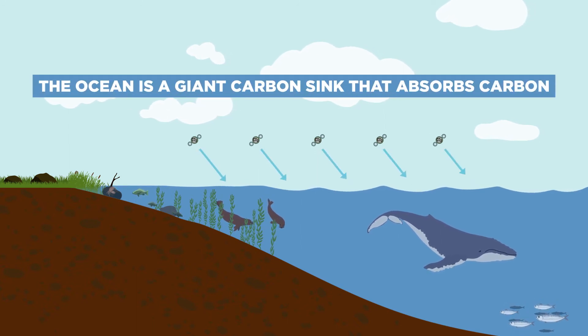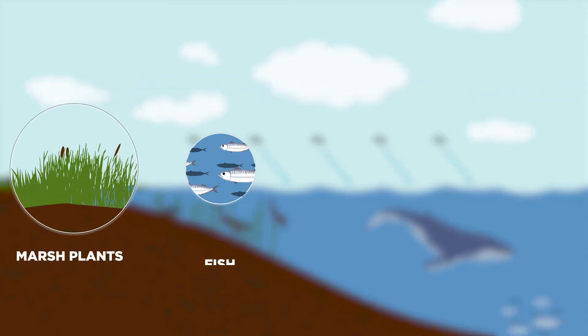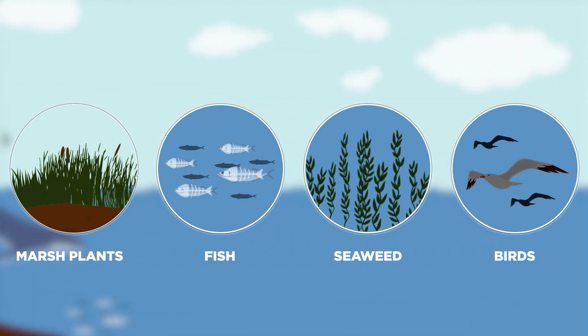The ocean is a giant carbon sink that absorbs carbon. Marine organisms from marsh plants to fish, from seaweed to birds, also produce carbon through living and dying.